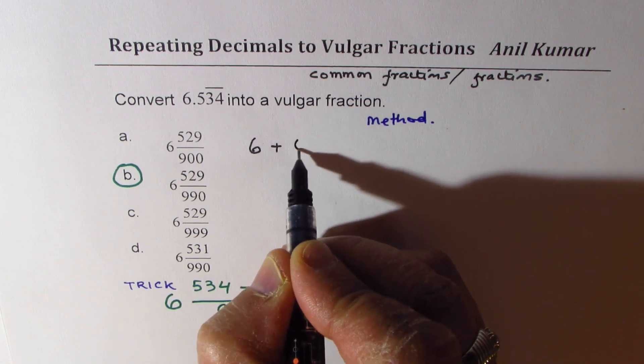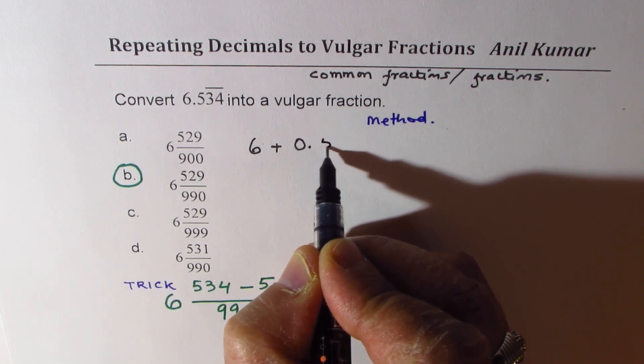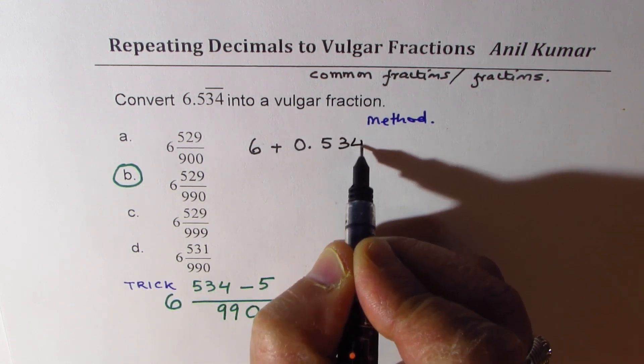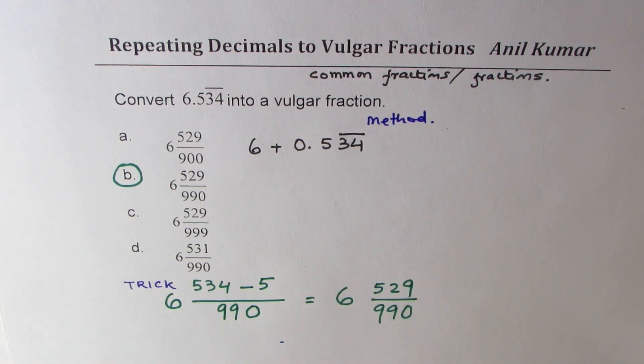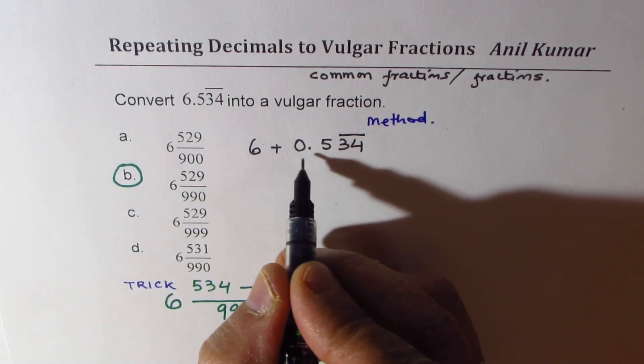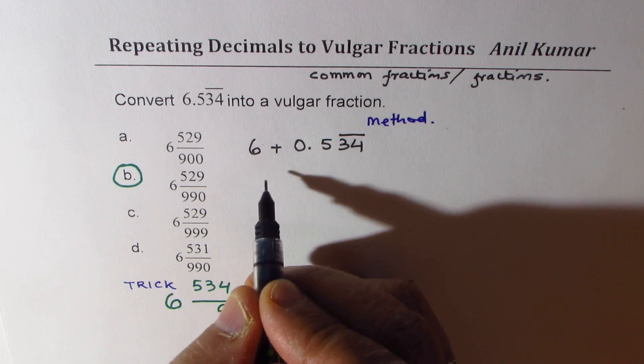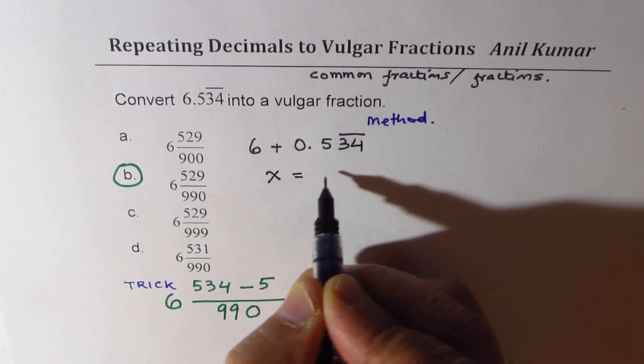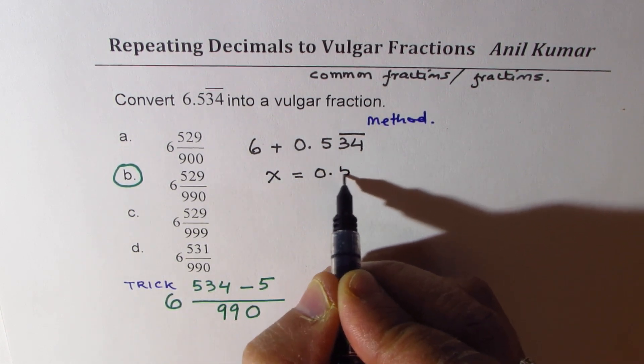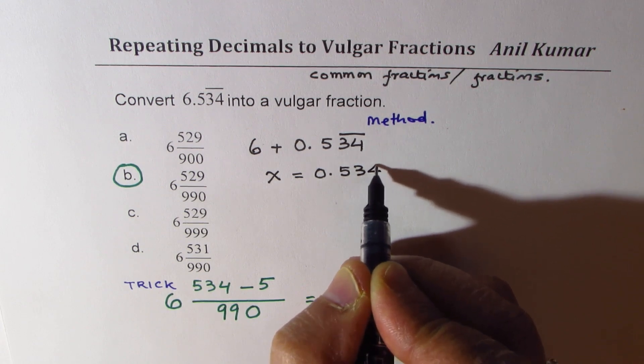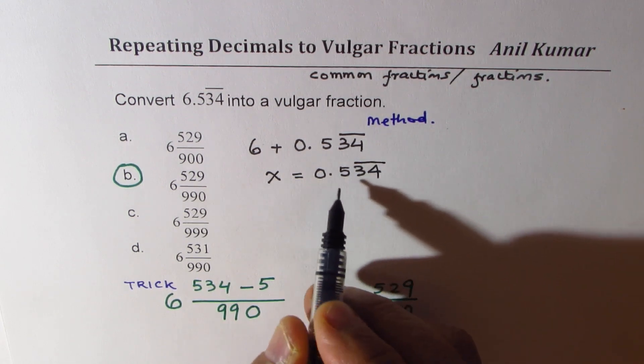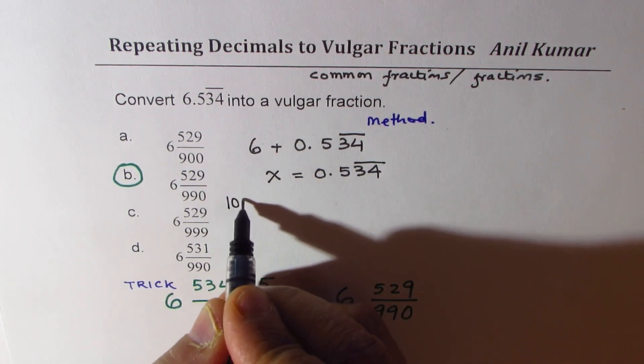6.534 means we have 6 wholes plus we want to find what is 0.534 where 34 is repeating decimal. So we'll work with 0.534. Let x be equal to 0.534 recurring.